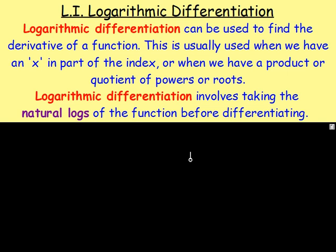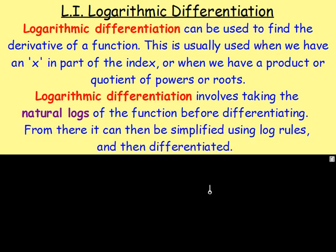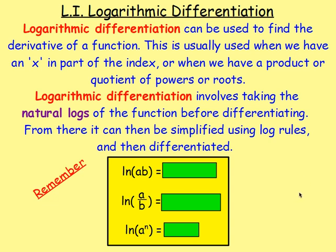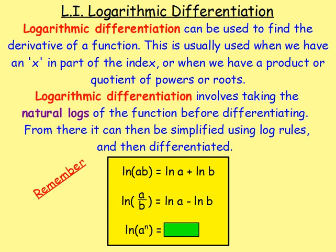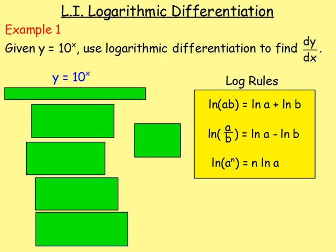Then, if we can, we apply our log rules to make it simpler. Remember from higher, our log rules are: ln(a × b) = ln(a) + ln(b); ln(a ÷ b) = ln(a) − ln(b); and ln(a^n) = n·ln(a), where we move the power n down in front. Those are our log rules.